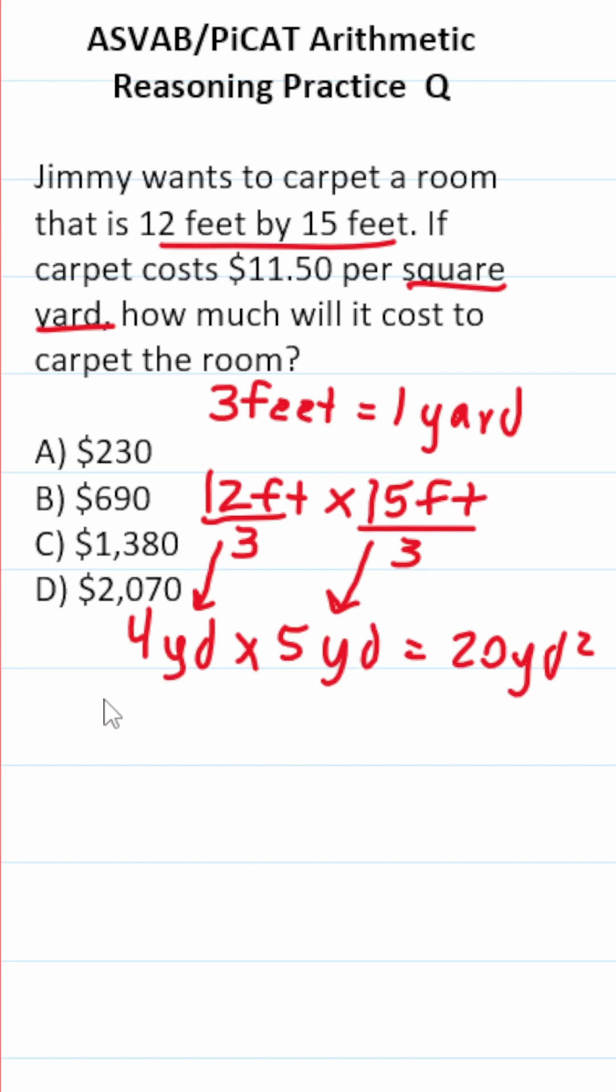4 times 5 is 20 square yards. Now that we know the area of our room, we can multiply that by the cost.